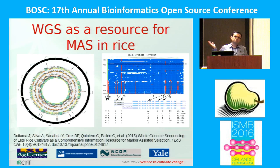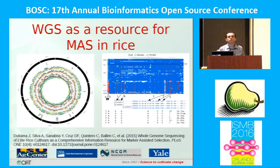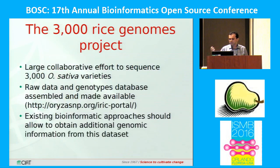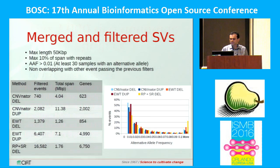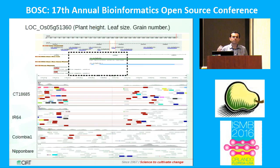I will skip our nice showcase, which is the analysis of 100 genomes of rice using whole genome sequencing, in which we assessed diversity and developed markers for marker-assisted selection. This work led to our participation in the 3,000 rice genomes project, in which NGSEP is one of the tools, and we are finding a lot of nice structural variation affecting agronomically important genes.